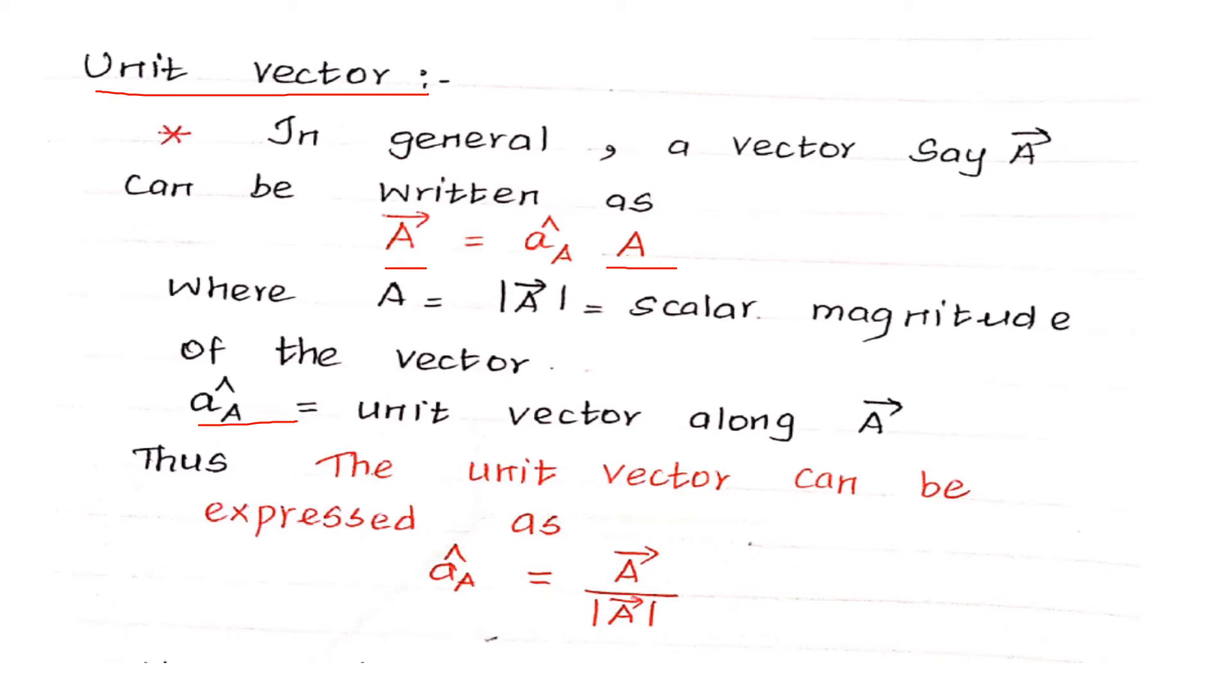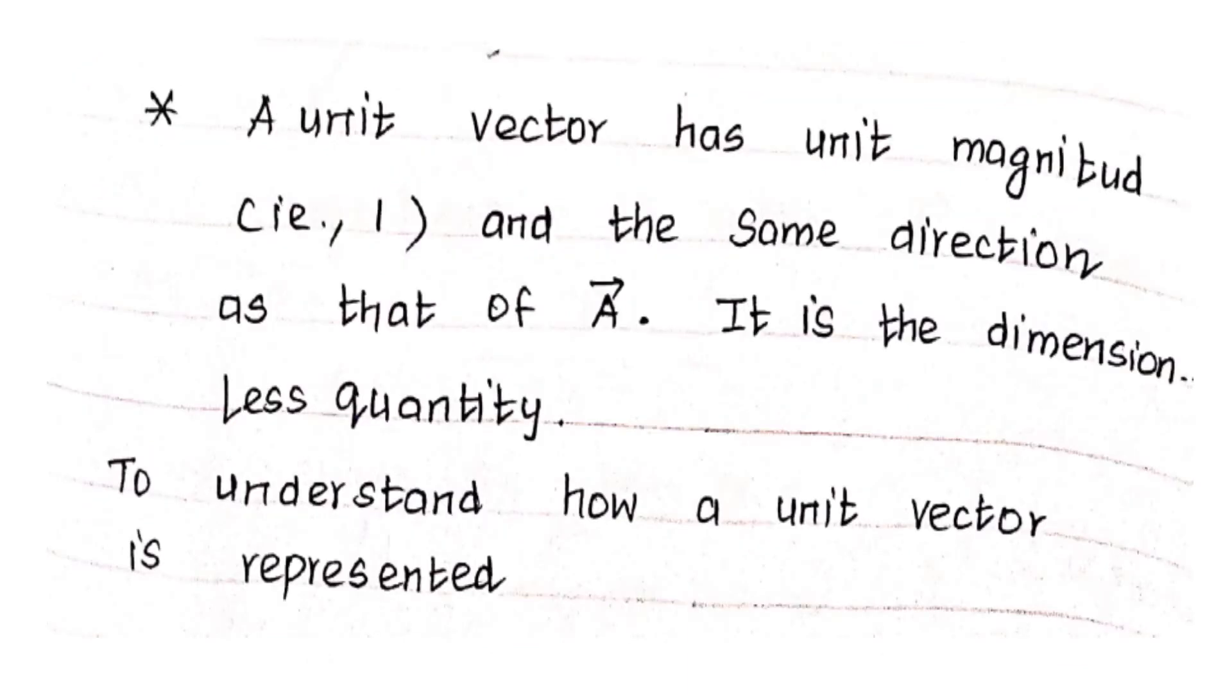Thus, the unit vector can be expressed as what is a_A? A suffix A that is equal to A vector divided by magnitude of A. And next, we are going to see what about the property of unit vector. What is unit vector? This unit vector has unit magnitude. That is very important. And the a_A, it is same direction as that of A. This is the second property. And third one is, it is a dimensionless quantity. That is also very important.